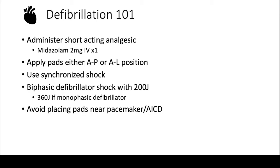Whenever you do your ACLS classes, we always talk about the different joules you can use. For the most part, you're always going to do 200 joules. I've had attendings tell me it's better to shock someone once with a little more joules than to shock them two or three times with lower or escalating joules. These are for biphasic defibrillators — 200 joules is the max. There are 360 joules in the monophasic defibrillators, but if you're working in most hospitals in the U.S., they will all have biphasic defibrillators maxing out at 200 joules.